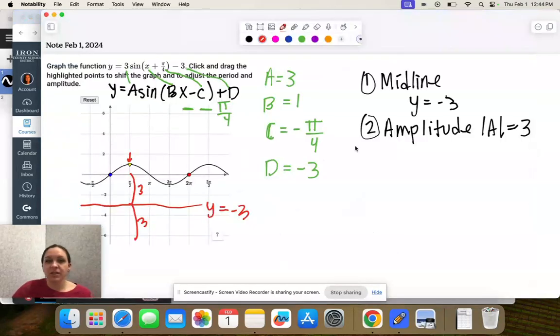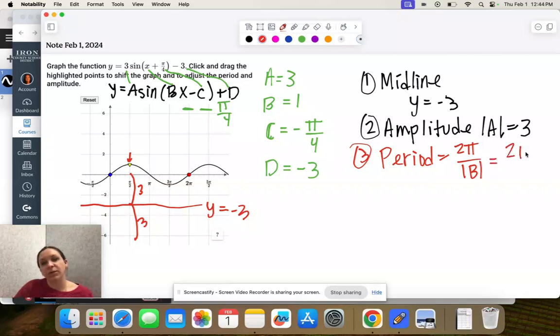Next is period. The period, we use our B value. It's equal to 2π over the absolute value of B. And this one, our period's not changing because B is 1. So our period is going to be 2π.